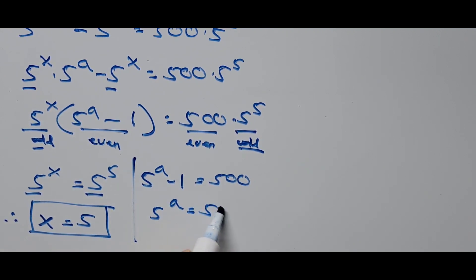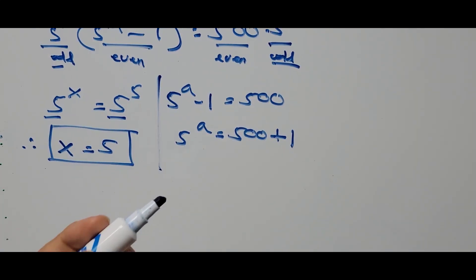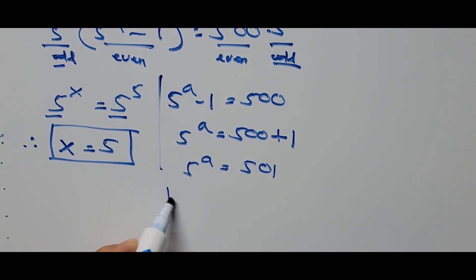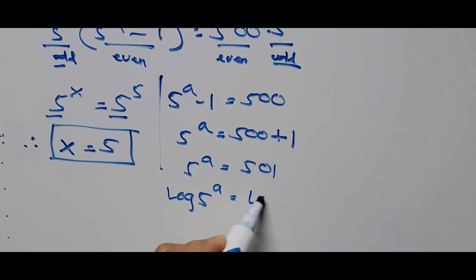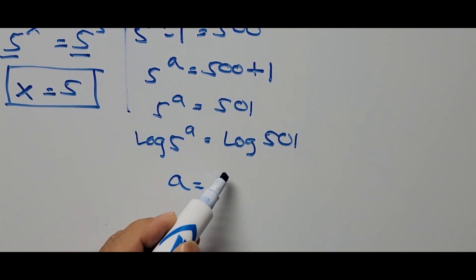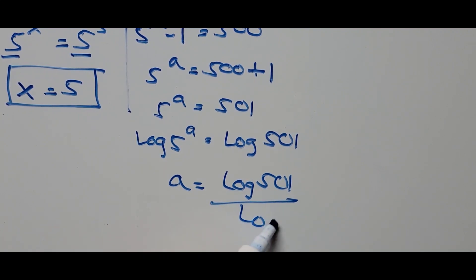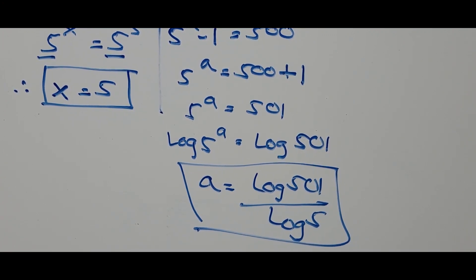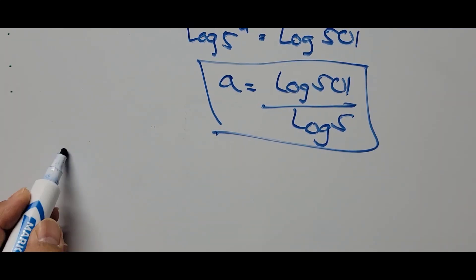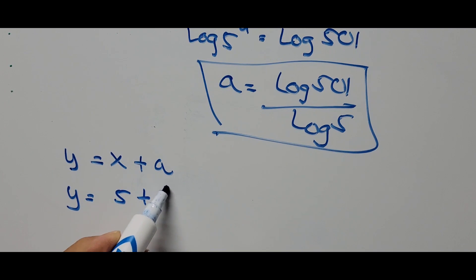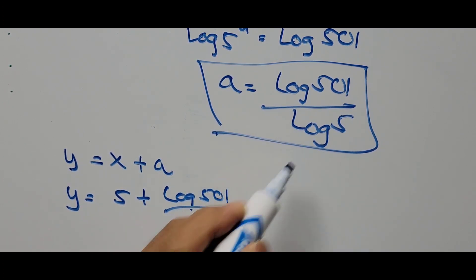Taking logarithms: log(5^a) equals log(501), so a equals log(501) divided by log(5). Substituting back into y equals x plus a, we get y equals 5 plus log(501) divided by log(5).